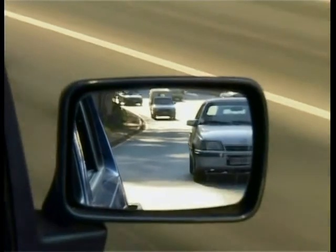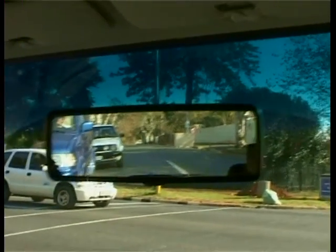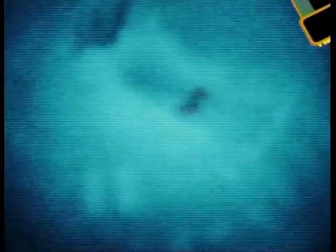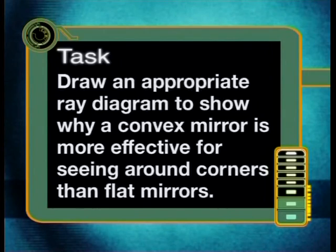This feature of convex mirrors makes them very useful in everyday life. Convex mirrors are used in shops to give a view of a large area because they provide wide-angle views. In cars, the side mirrors and rear-view mirror are made convex so a large area can be seen in a small space. Some shopkeepers also use convex mirrors to see around corners. For today's task, draw a ray diagram showing why a convex mirror is more effective for seeing around corners than flat mirrors.